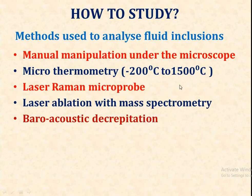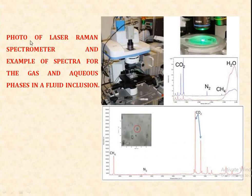How do we study fluid inclusions? The methods used to analyze fluid inclusions include manual manipulation under the microscope, microthermometry (ranging from minus 200°C to 1500°C), laser Raman microprobe, laser ablation with mass spectrometry, and baro-acoustic decrepitation. A photograph of the laser Raman spectrometer and an example of spectra for the gas and aqueous phase in the inclusion are shown here.